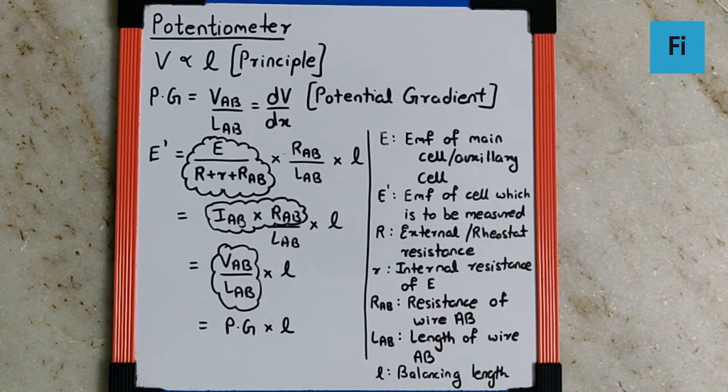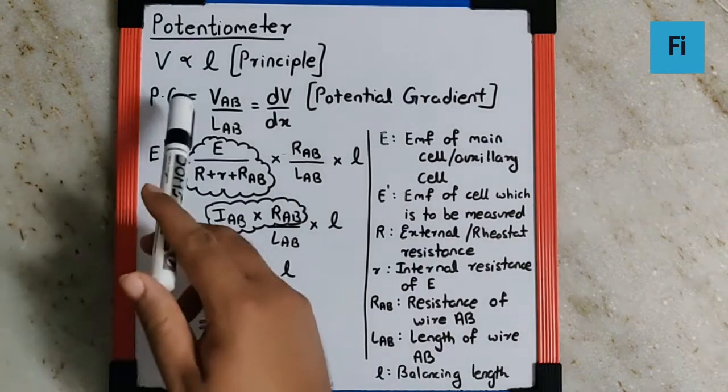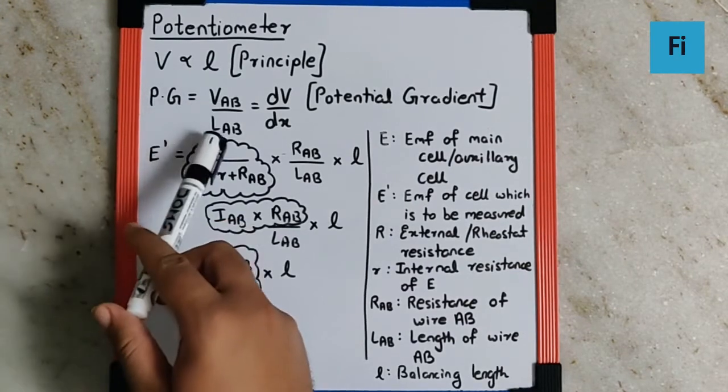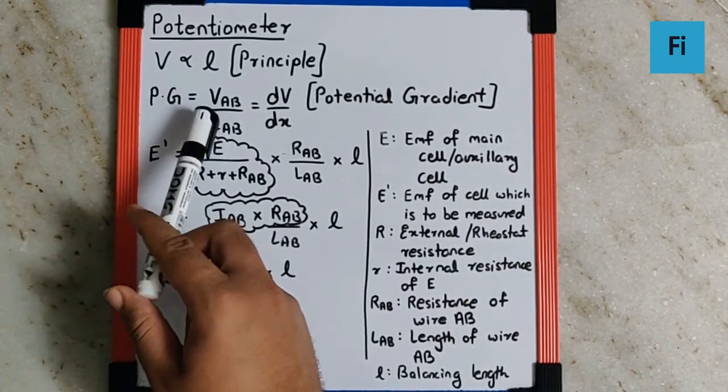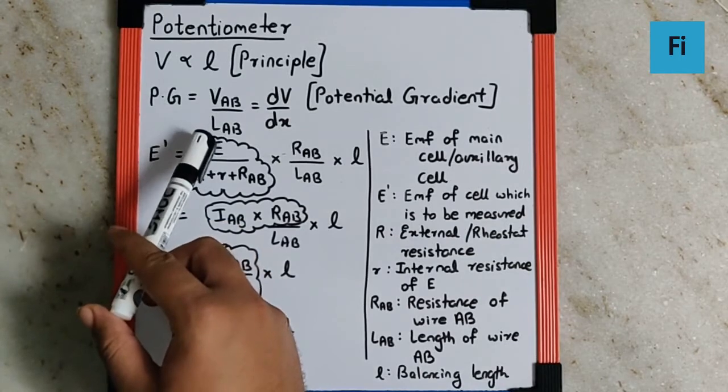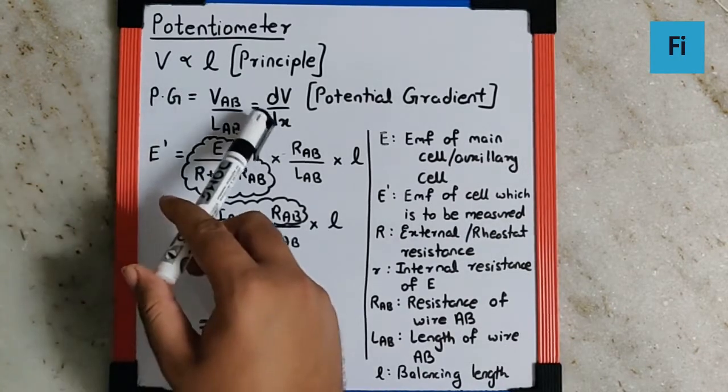Then potential gradient can be written as VAB by LAB, that is the potential difference across wire AB upon the length of the wire AB, which can also be written as dV by dx, known as potential gradient.